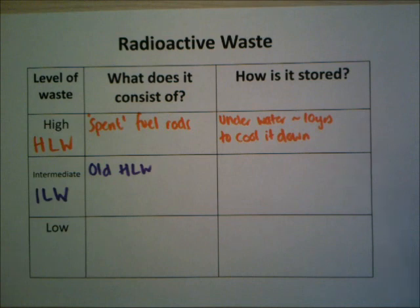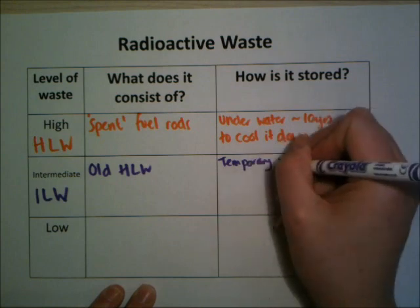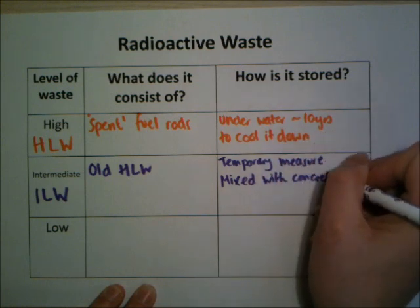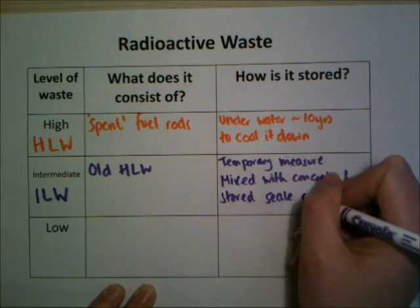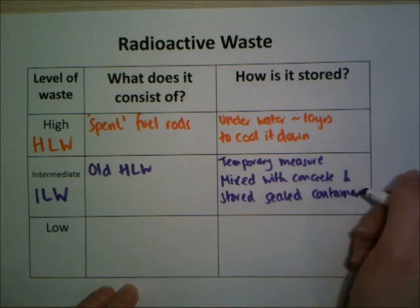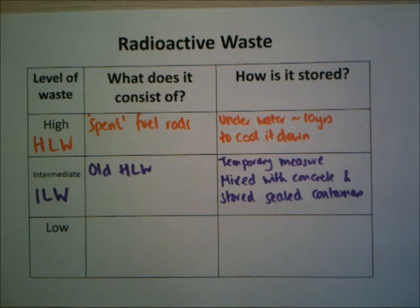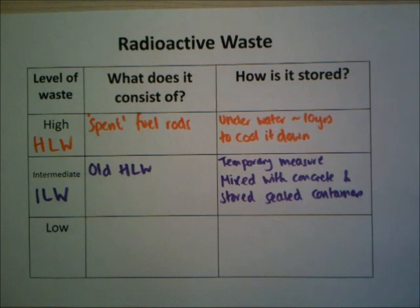Intermediate-level waste (ILW) is old high-level waste whose activity has reduced via nuclear half-life decay to a safer level. This is the difficult one — we only have temporary measures. Currently it's chopped up, mixed with concrete, and stored in sealed containers, but we don't really know where to put it permanently. There are proposals to bury it in underground caverns, but there's the challenge of warning future civilisations thousands of years from now when today's languages may no longer be understood.